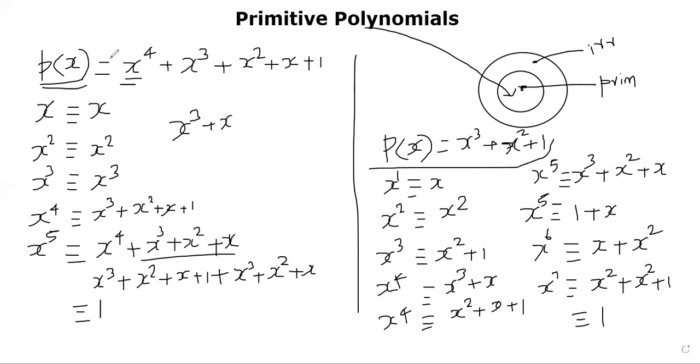On your left, you see an irreducible polynomial, but x is not generating all the members of the polynomial. You cannot generate all third degree polynomials using this particular p of x. So it's just irreducible. Here, with this p of x, you can generate all the members of the polynomial of degree 2. So all primitive polynomials are irreducible, but not all irreducible polynomials are primitive.